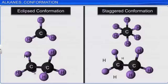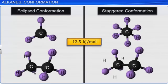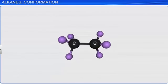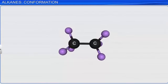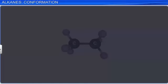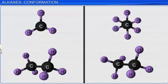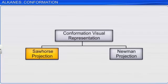The energy difference between eclipsed and staggered conformations is 12.5 kJ per mole, which is easily overcome at room temperature and pressure. Due to this, it is not possible to separate different conformational isomers of ethane. Now that we have seen what conformation means, let's learn the two standard visual representations used to explain it. These are known as sawhorse projection and Newman projection.